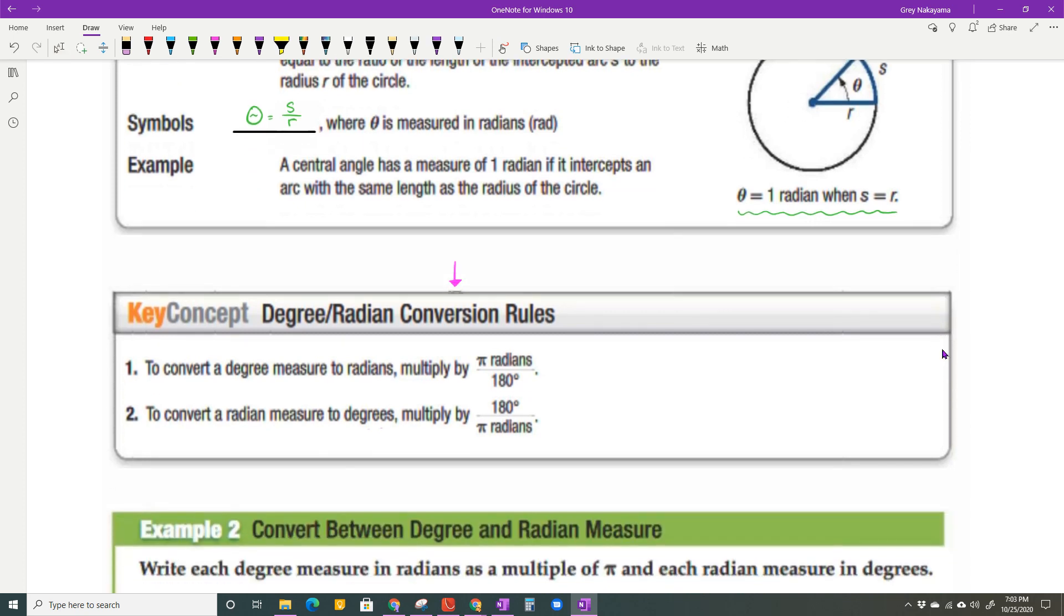But these are our rules for conversion. If you are going to radians, then you're going to multiply by pi over 180. If you're going to degrees, you're going to multiply by 180 over pi. So if you notice, whatever you're going to goes on top. If I want to go to radians, I put my radians on top. If I want to go to degrees, I put my degrees on top. So that's what that means.